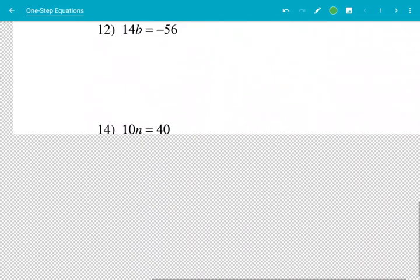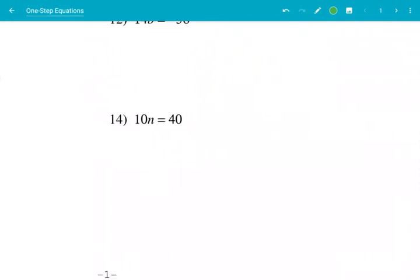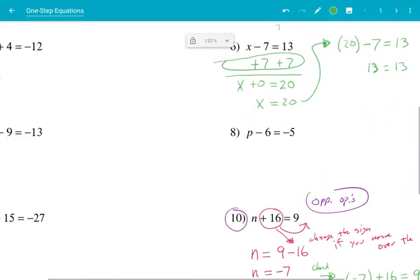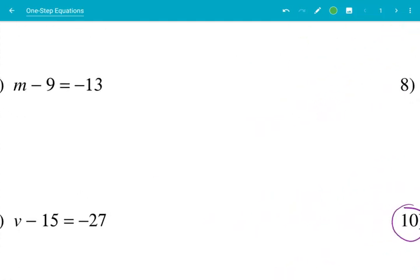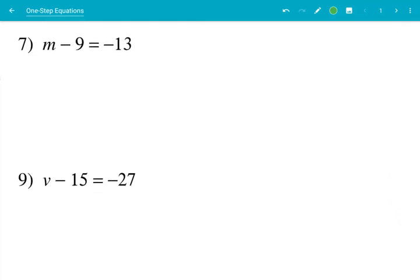Let's do one with some negative signs. Let's look at this one. Number 7. Negative signs. Well, I got a negative sign on both sides. So what's being done to my variable here? I'm subtracting 9. So I'm going to do the opposite. Plus 9. Plus 9. That goes away. It becomes 0. I'm not even going to write it here. m equals minus 13 plus 9. That's minus 4.